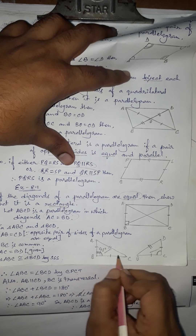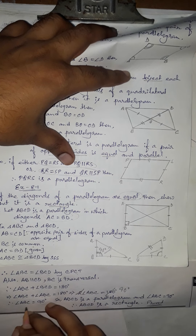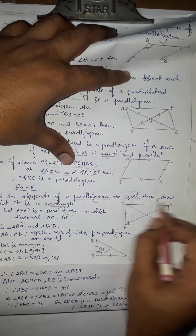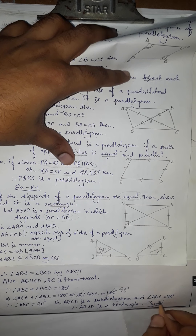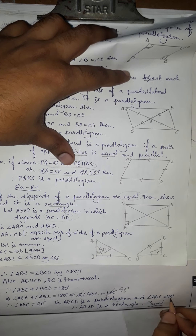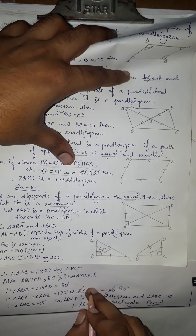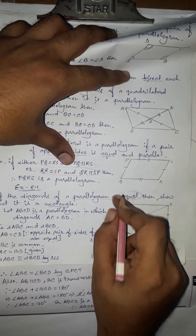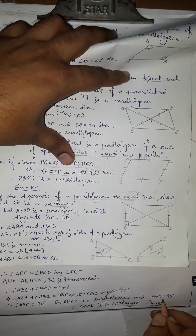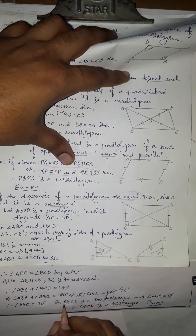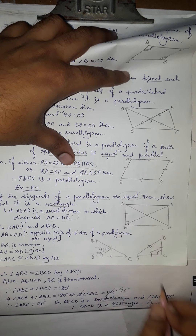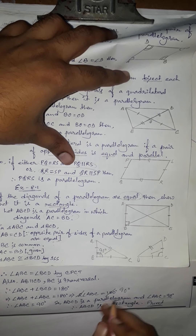We have proved that angle ABC equals 90 degrees. So ABCD is a parallelogram in which one angle — angle B — is 90 degrees. Therefore ABCD is a rectangle, because a rectangle is a parallelogram with one angle equal to 90 degrees. ABCD was already given as a parallelogram and we proved one angle is 90 degrees, so it must be a rectangle.